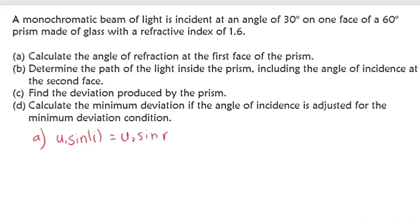n₁ is for air, where the light is coming from, so the index for air is 1. The angle of incidence given is 30 degrees. This equals n₂, the index for the glass prism, which is 1.6. So we have 1 × sine 30 = 1.6 × sine R.